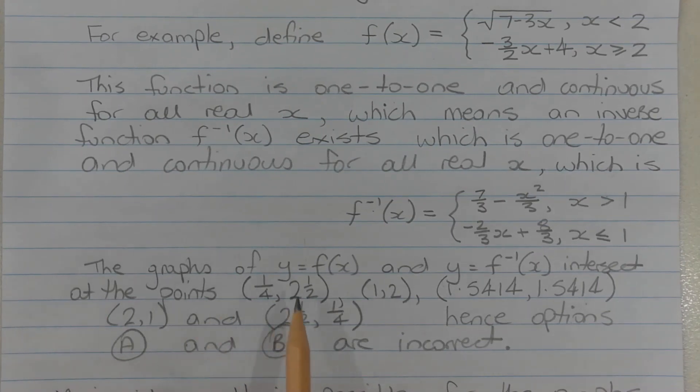The graphs of y = f(x) and y = f^(-1)(x) intersect at the following points: 1/4 comma 2.5, 1 comma 2, 1.5414 comma 1.5414 (these values are approximations), 2 comma 1, and 2.5 comma 1/4. Hence options A and B are incorrect.